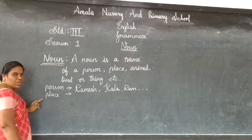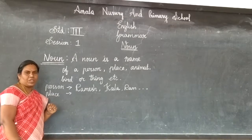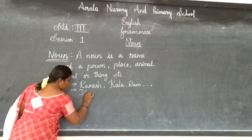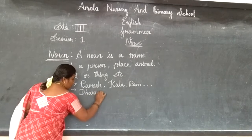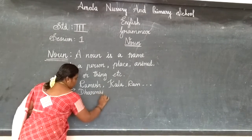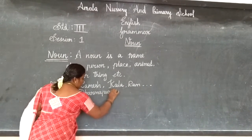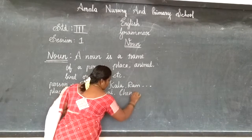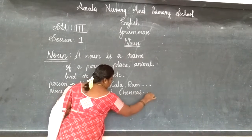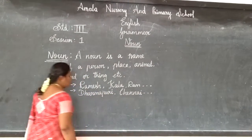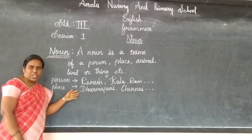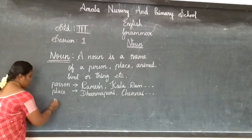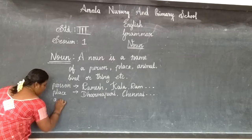Then we will go to place. That will be the item in Dharmapuri. So, Dharmapuri, Chalmai etc. Then your street name also comes under the place name.